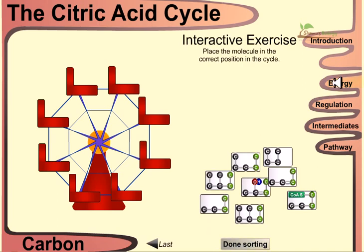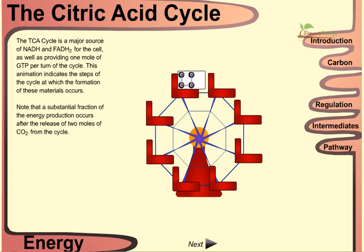The TCA cycle is a major source of NADH and FADH2 for the cell, as well as providing one molecule of GTP per turn of the cycle. This animation indicates the steps of the cycle at which the formation of these three materials occurs. Note that a substantial fraction of the energy produced occurs after the release of two molecules of CO2.